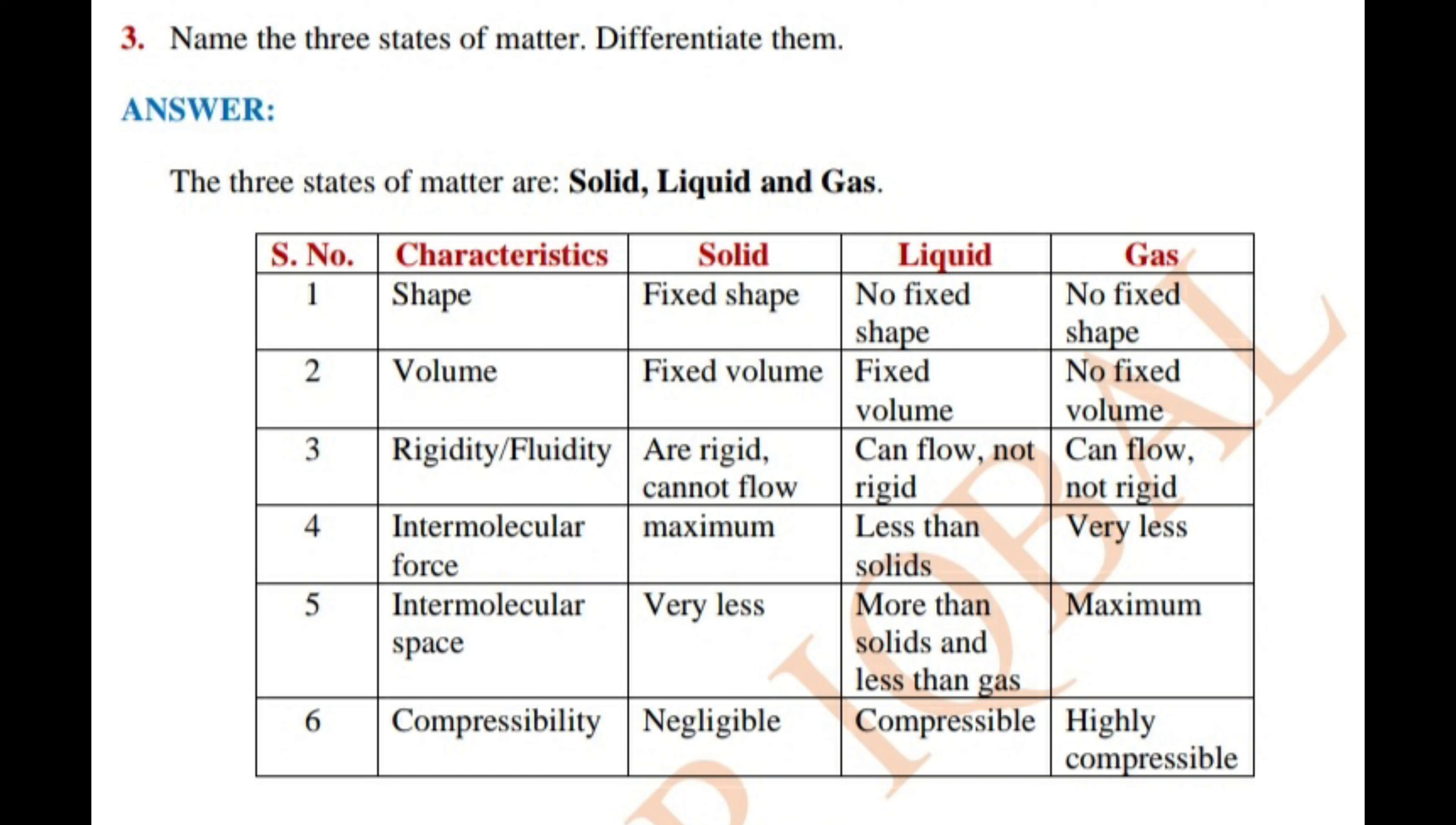Now see the table. Serial number one, characteristics: shape. Solid: fixed shape. Liquid: no fixed shape. Gas: no fixed shape. Serial number two: volume. Solid: fixed volume. Liquid: fixed volume. Gas: no fixed volume.